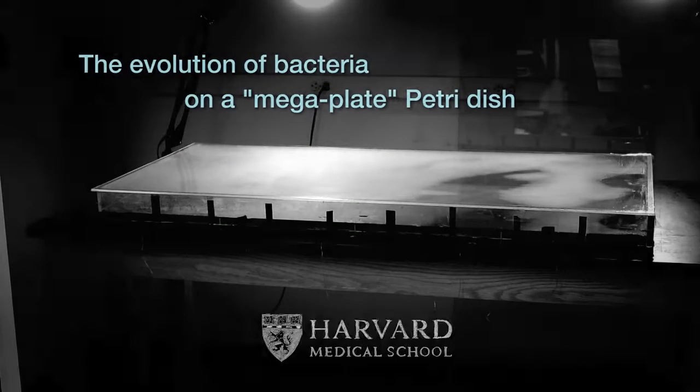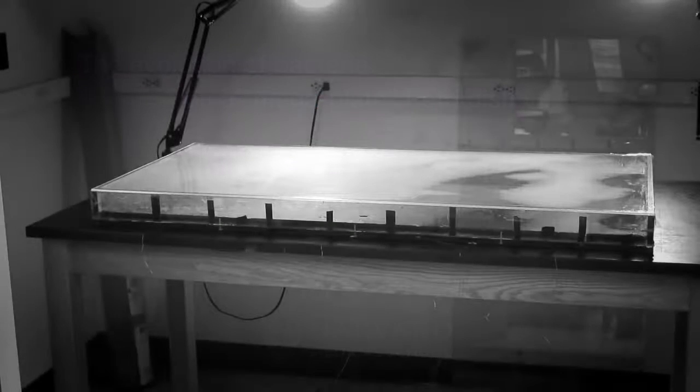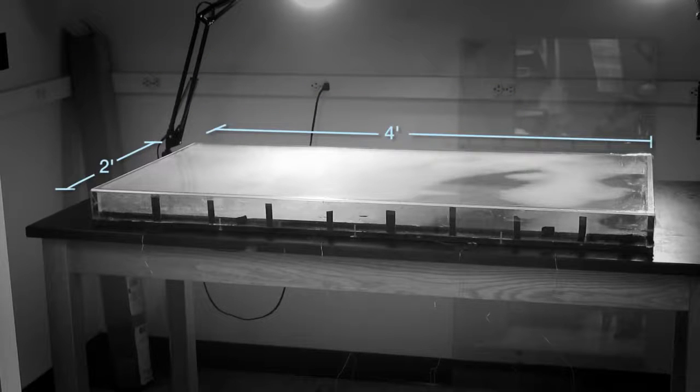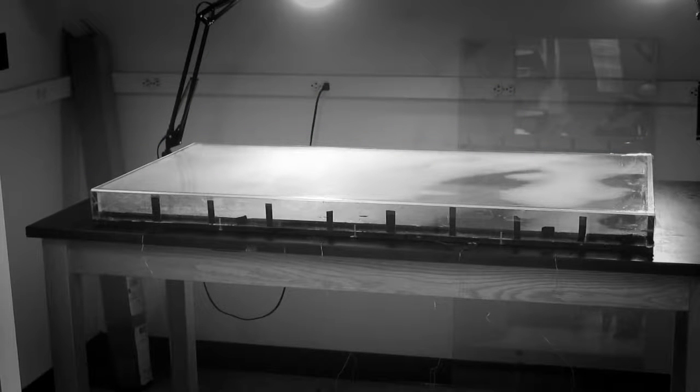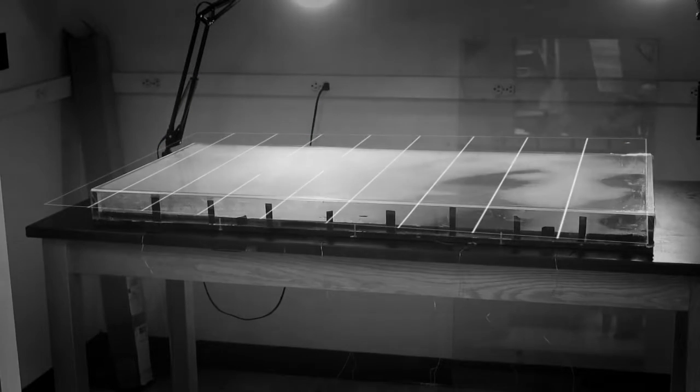So what we ended up building was basically a petri dish, except that it's two feet by four feet. And the way we set it up is that there are nine bands. At the base of each of these bands, we put a normal petri dish thick agar with different amounts of antibiotic.